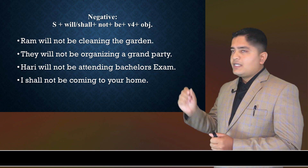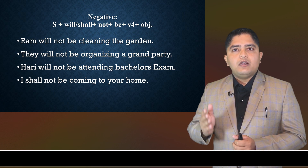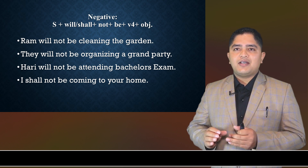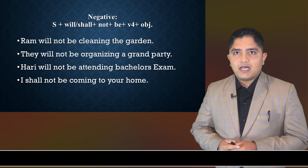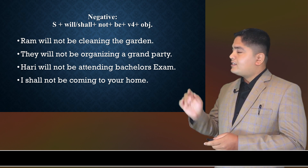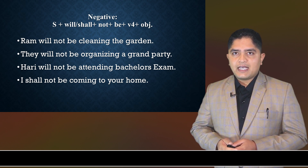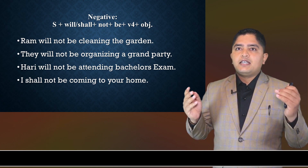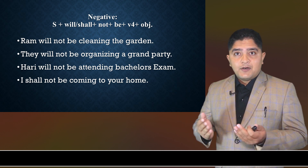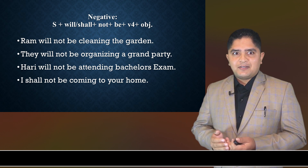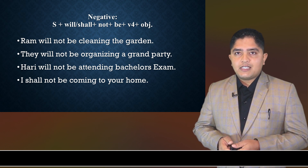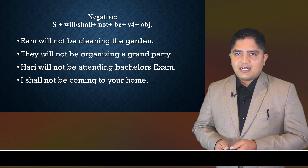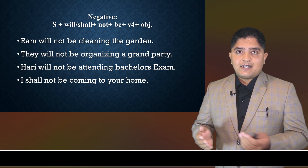Now how to make the negative? Simply add 'not' right after will or shall. The structure is: Subject + will/shall + not + be + verb(ing) + object. For example: 'Ram will not be cleaning the garden.' 'They will not be organizing a grand party.' 'Hari will not be attending bachelor's examination.' 'I shall not be coming to your house.'